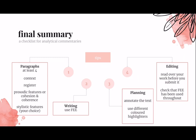In summary: for paragraphing, you need at least four paragraphs — context, register, prosodic features or cohesion and coherence, then one to three paragraphs on stylistic features based on what's most relevant. For writing, use FEE structure throughout and double-check it over and over. For planning, annotate the text using different colored highlighters or symbols for different subsystems, for informal or formal language, for language relating to audience or setting. Find what works for you and use it consistently.